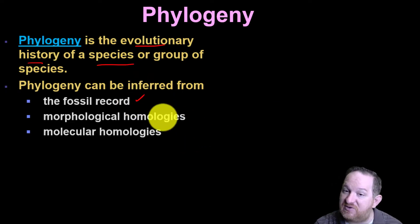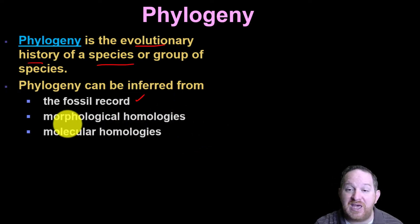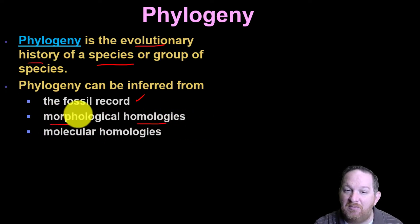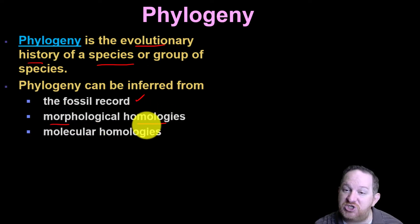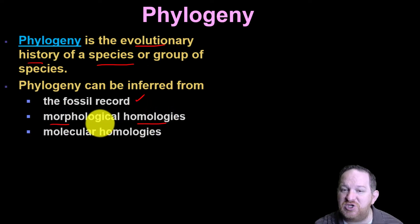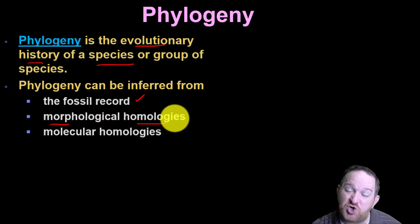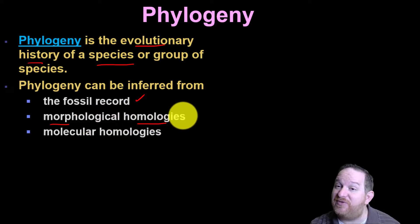Well, of course we can look at fossils. We can look at their morphological homologies — now that's a big word. Morphology refers to the shape and structure; homology refers to similarities in structure. So we look at the organisms: do they have some similar shapes, some similar structures? If they're similar, they're probably more closely related.